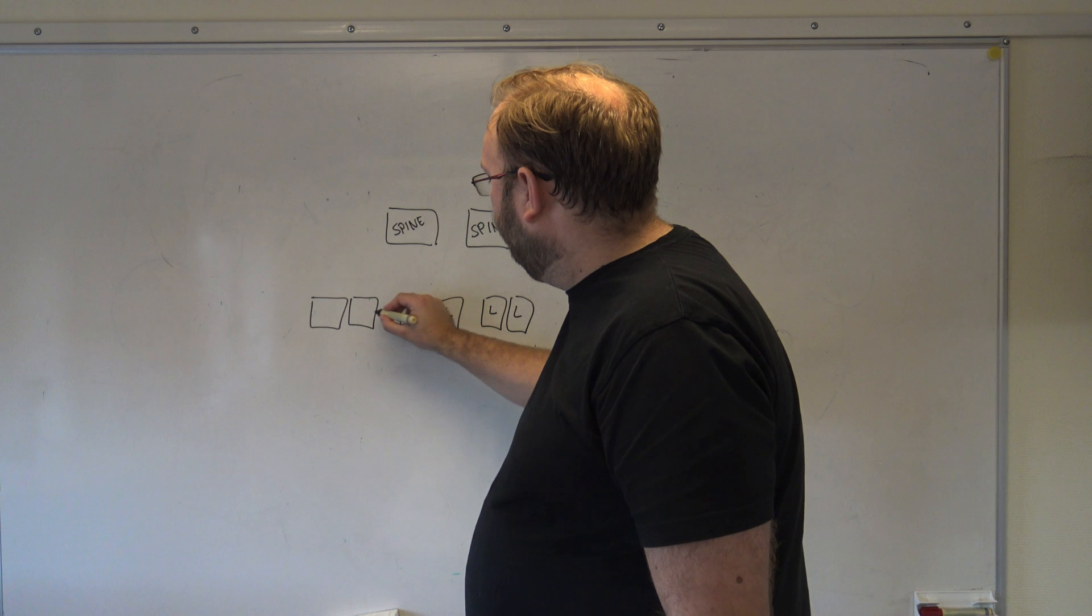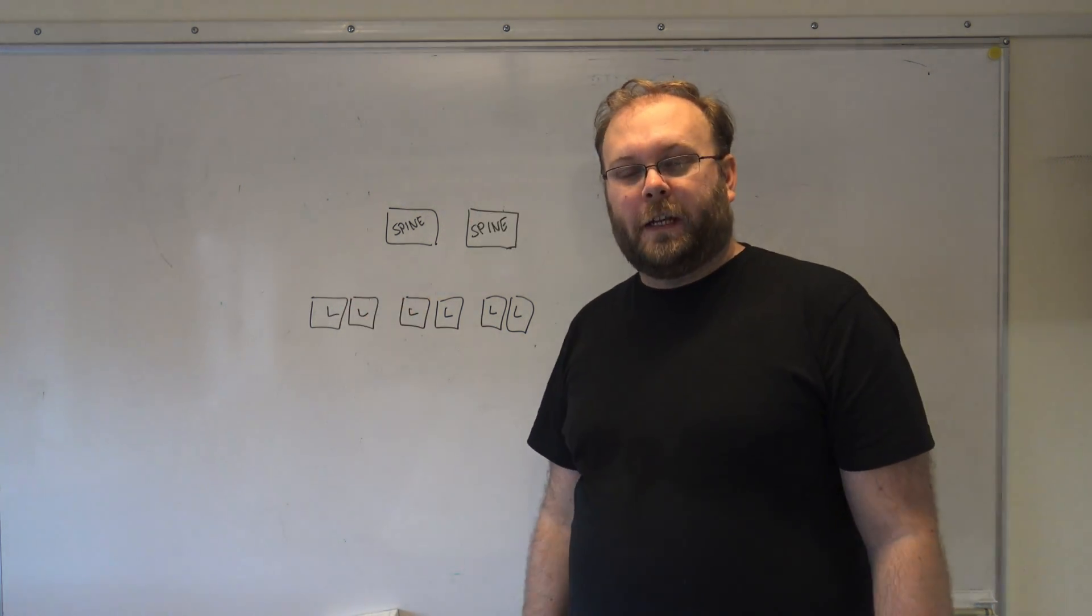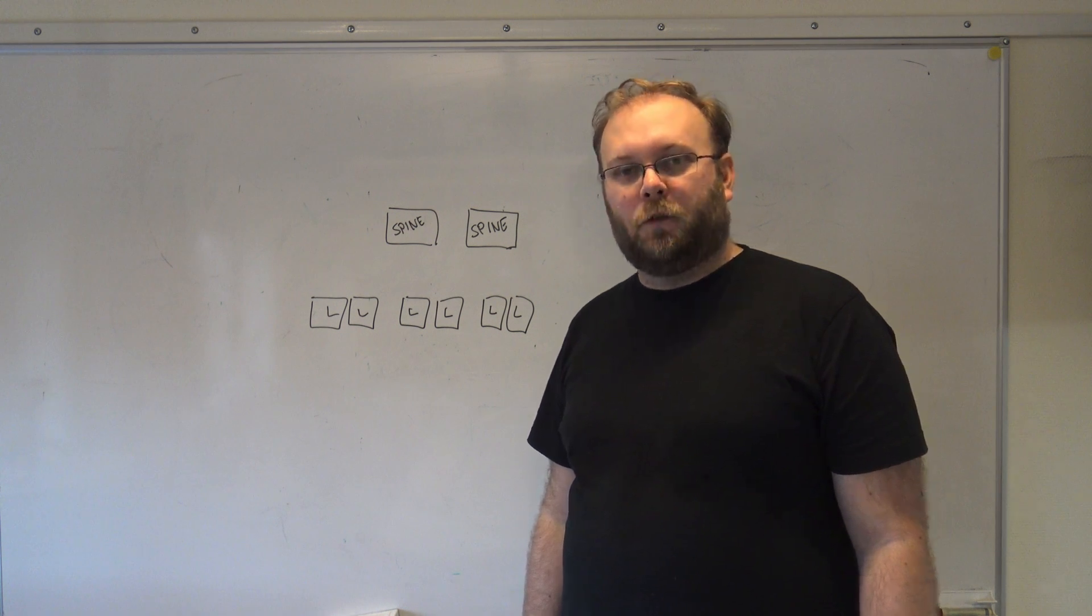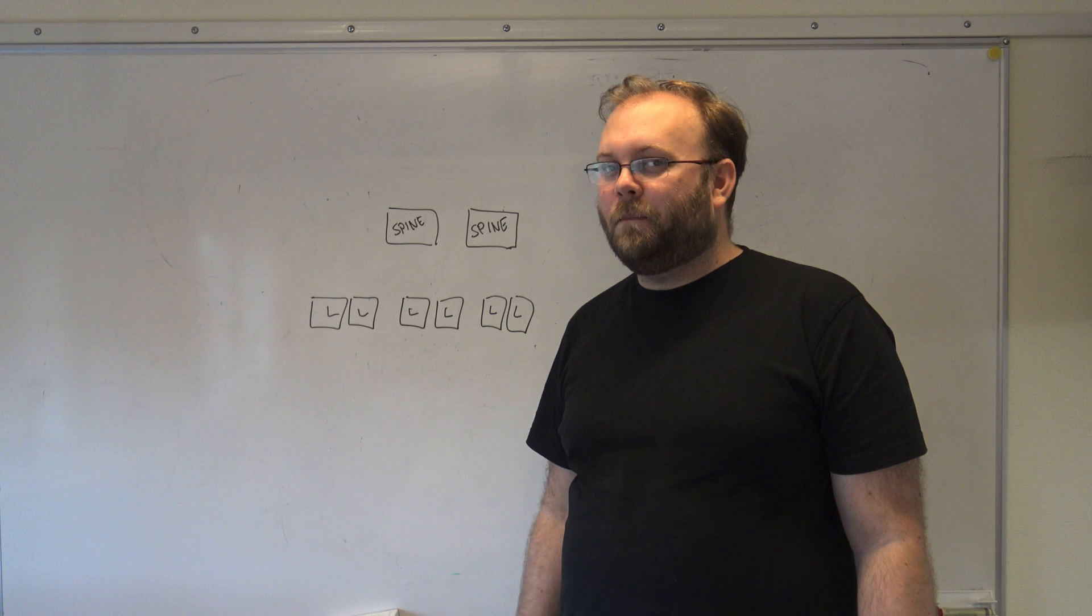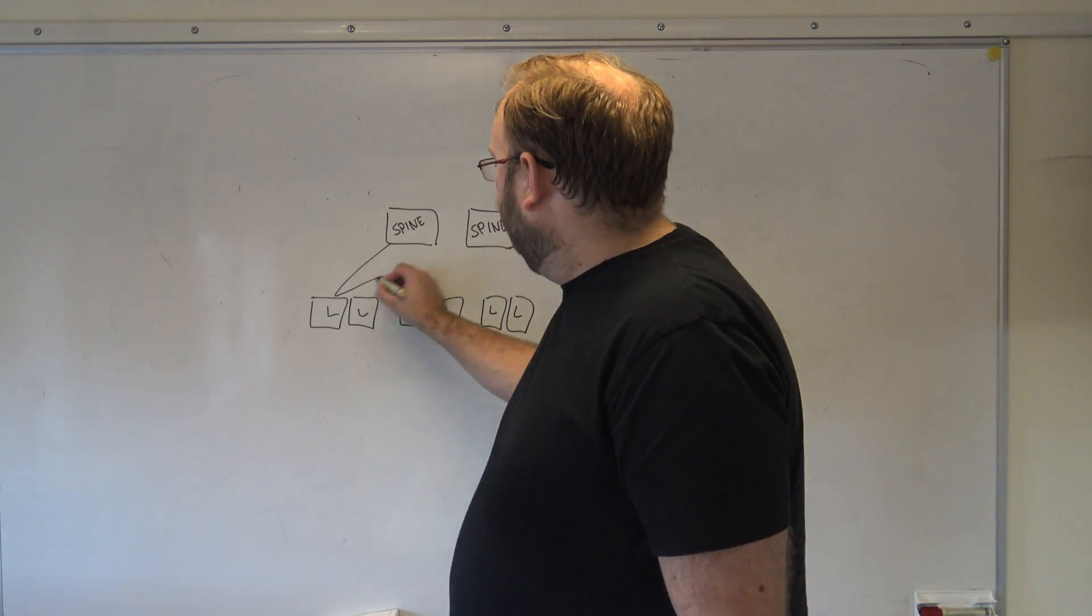So you just put an L in them for leaf. Each leaf switch is connected to each spine switch, so if you have two spine switches it's two uplinks, if you have three it's three uplinks. So I do like this.